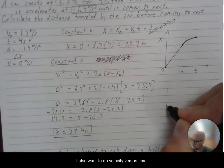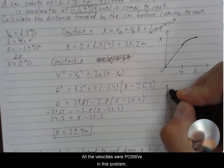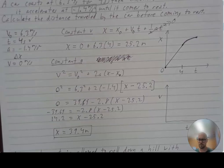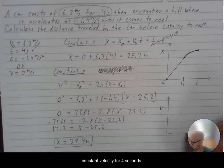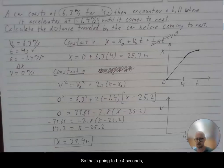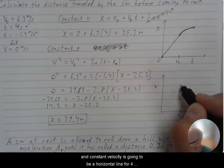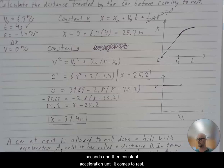I also want to do velocity versus time. All the velocities were positive in this problem. So I can start there. Now I want to do the same concept. Constant velocity for four seconds. So that's going to be four seconds. And constant velocity is going to be a horizontal line for four seconds.